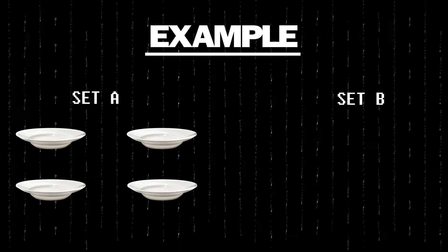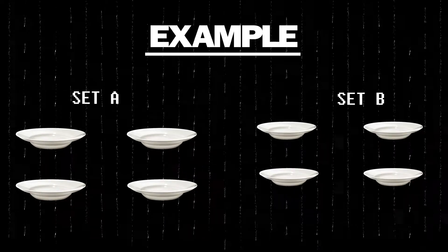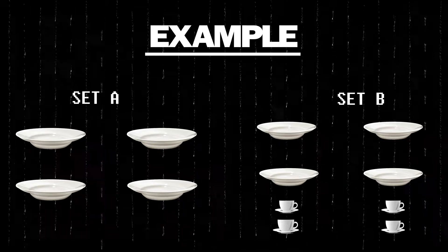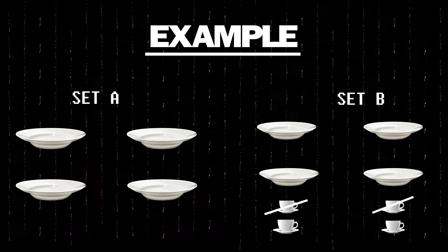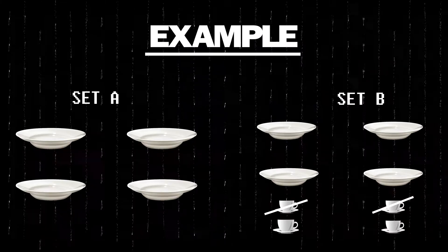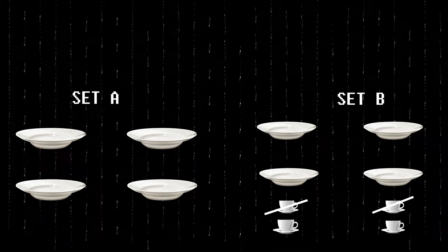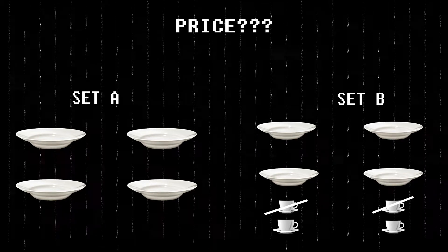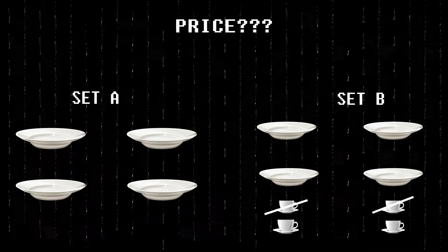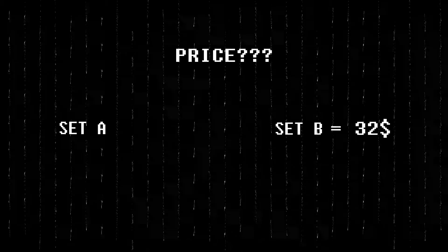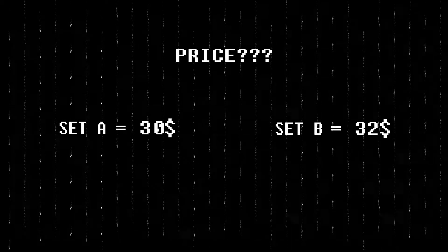There are two sets of dishes. Set A includes four complete dishes, and Set B includes four complete dishes plus four cups, two of which are broken. Now if I asked you to price Set A and Set B, normally you pay more for Set B than Set A because at least you get an extra two cups. So you might pay $32 for Set B and $30 for Set A.